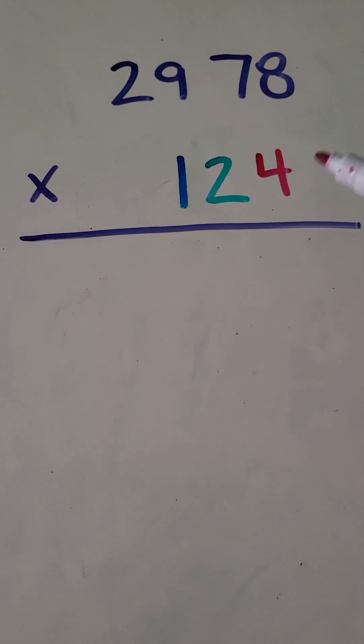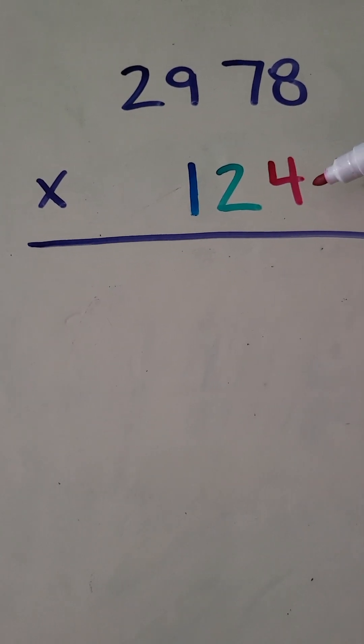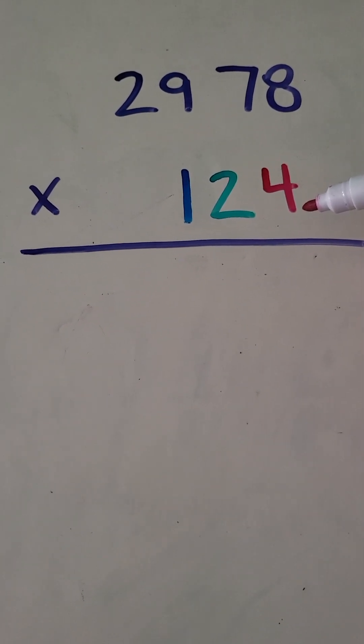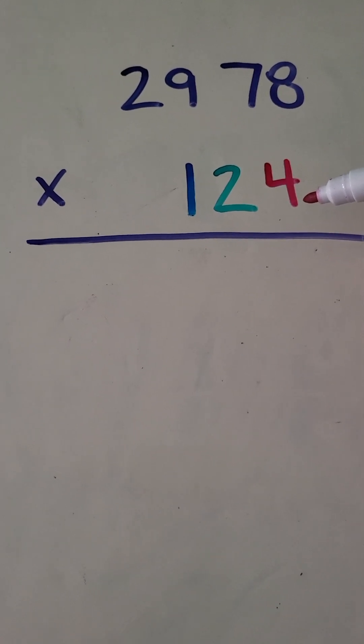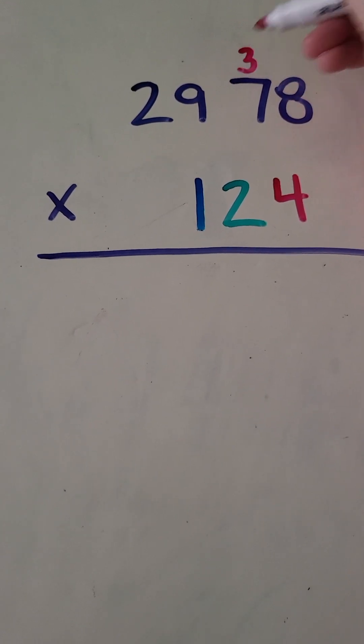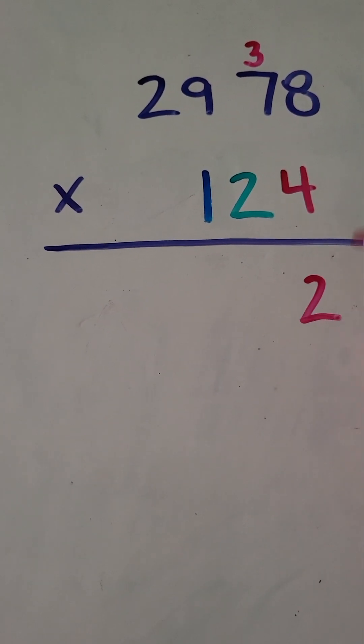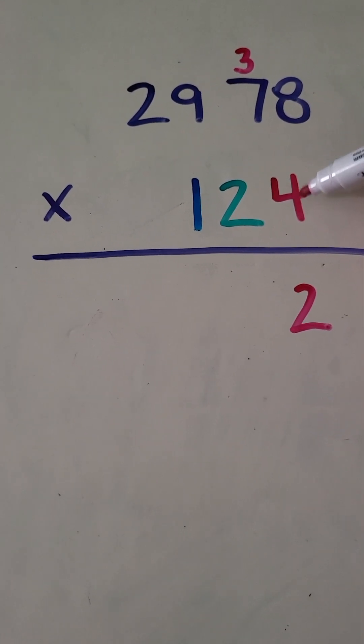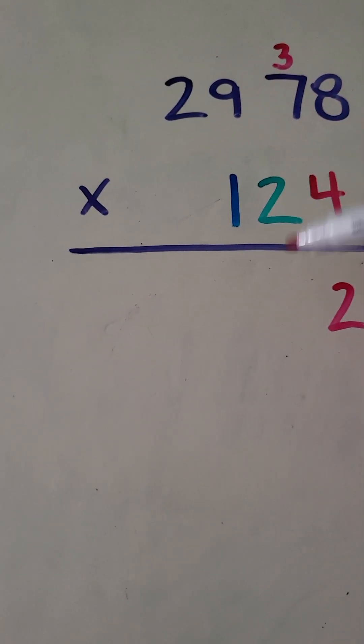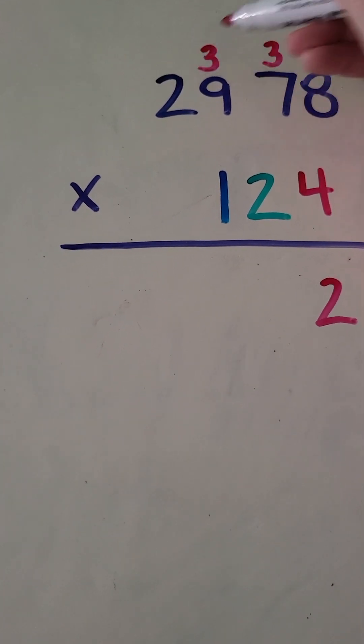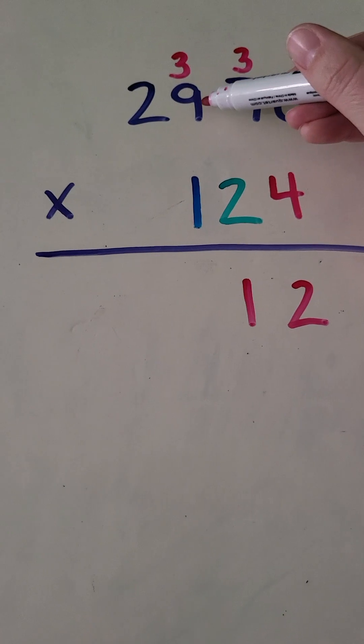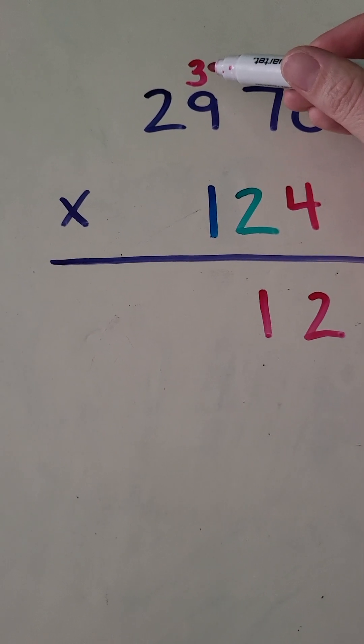I'm going to start with our ones place. So we're going to multiply the top number by the number in the ones place, which in this case is a four. So here we go. Eight times four is 32, carry the 3. Seven times four is 28 plus three, 31.